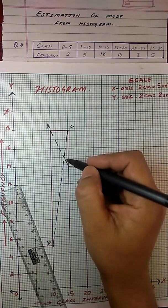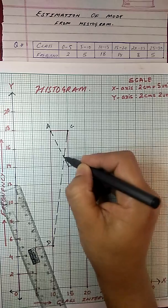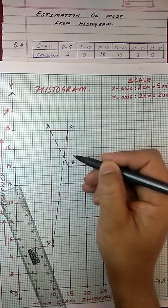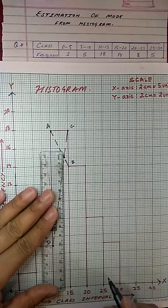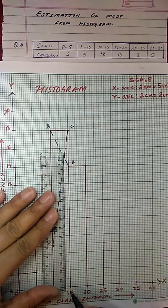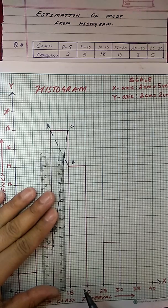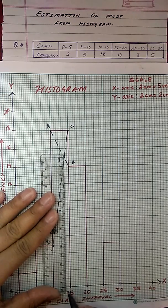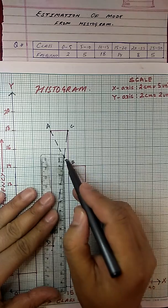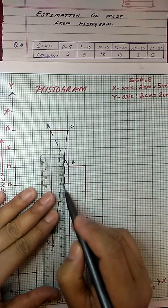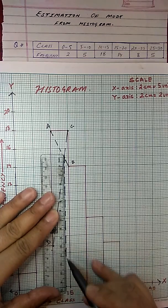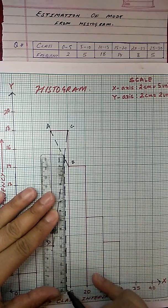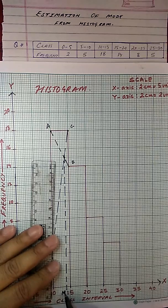Now these two lines intersect somewhere out here. As you can see, it intersects here. So from this point of intersection, we will drop a perpendicular on the x-axis such that it intercepts the x-axis at this point. Now this value is your modal value.